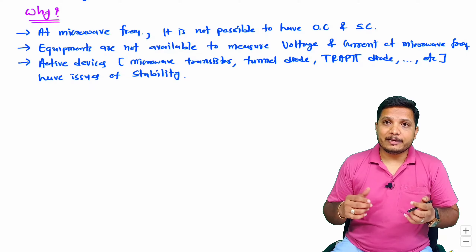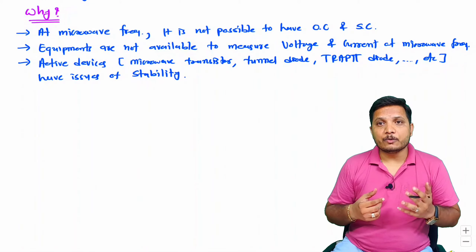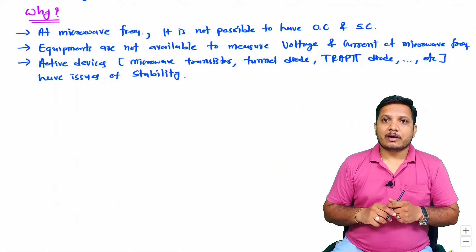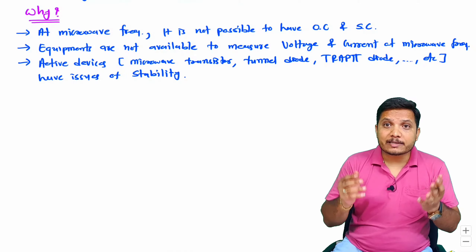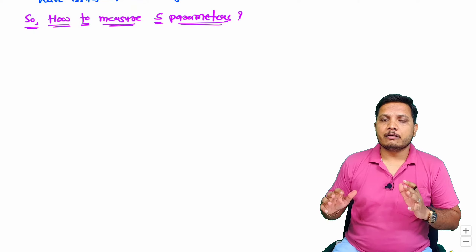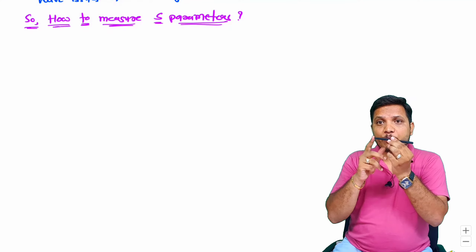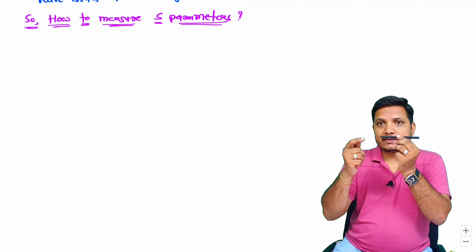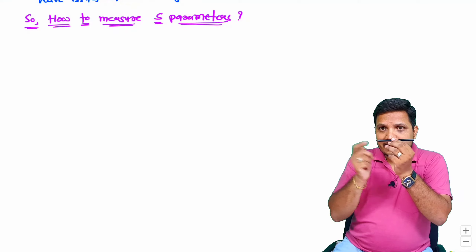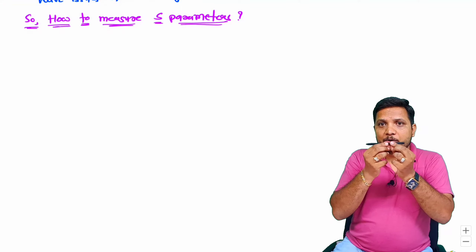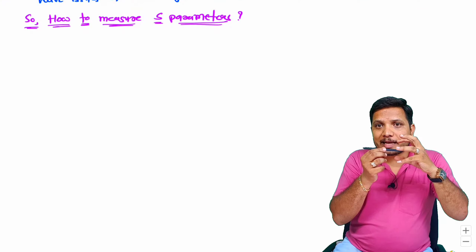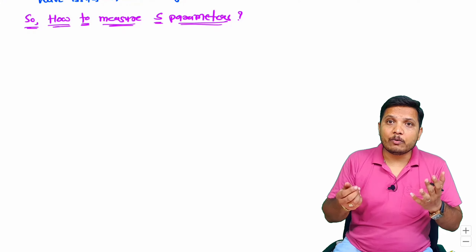Because of all these reasons, we don't do analysis of microwave components using Y parameter, Z parameter, ABCD parameter, or H parameter — here we do analysis using scattering parameters. How do we do measurement of scattering parameters? If you have a two-port network with one port and a second port, we insert a signal from one port and observe how much signal is incident inside and how much signal is getting reflected back. Then we insert signal at port 2 and again analyze incident and reflected signals. Based on this, we derive scattering parameters.